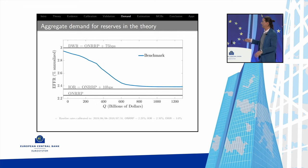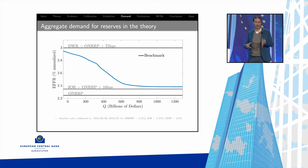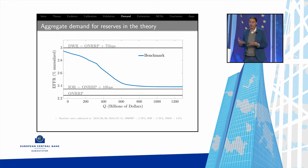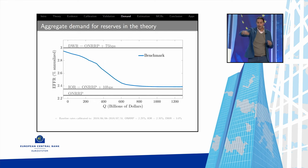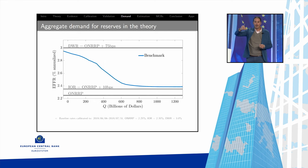Here is the model-generated output. We input the end-of-day distribution of reserves — an aggregate quantity distributed as observed in data — let the micro model run with banks trading and setting interest rates, then average them out to compute an effective Fed funds rate as a value-weighted average of all bilateral rates. For example, feeding 1.2 trillion dollars into the model gives the effective Fed funds rate implied by the model — a weighted average of marginal utilities across banks, types, and trading times. This is calibrated for 2019, right before the repo disruptions, with ONRRP, IOR, and discount window rates at that date.